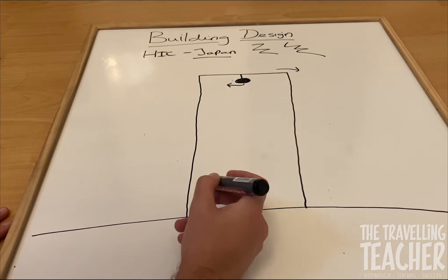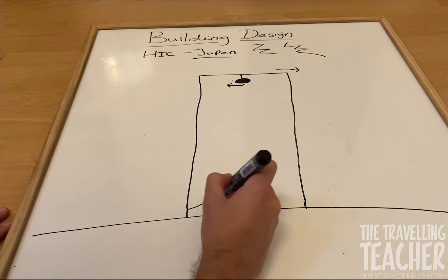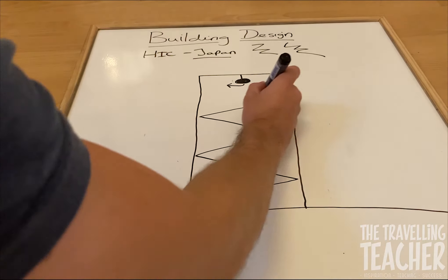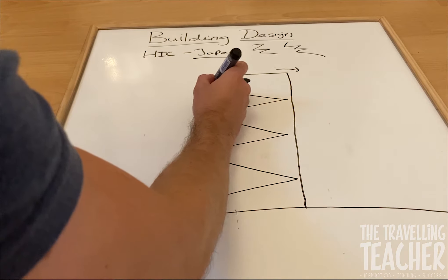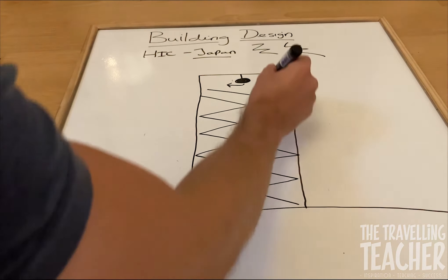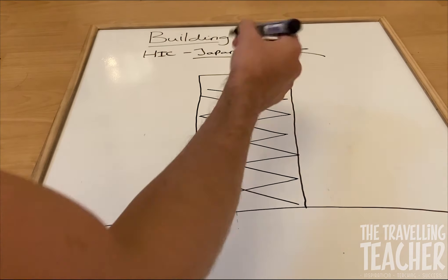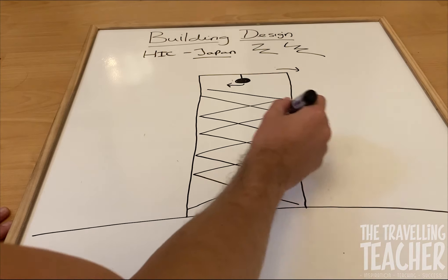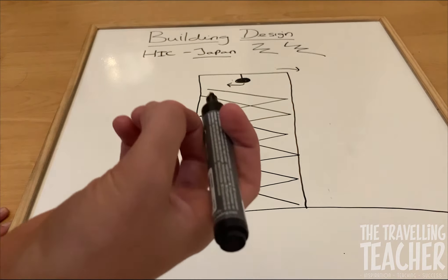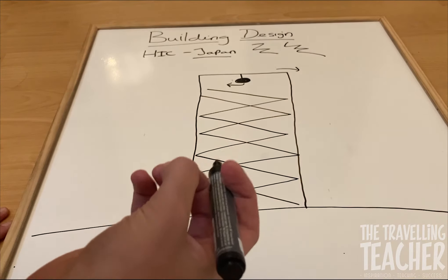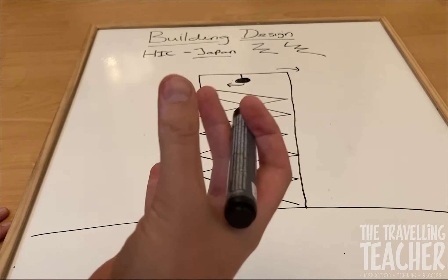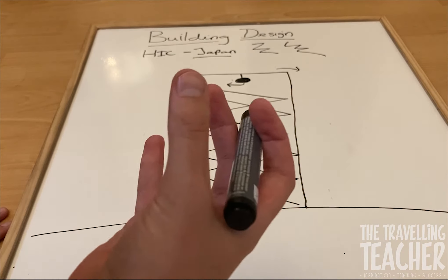The second thing they do is buildings may have cross bracing. So this is steel bracing that runs throughout the building. It can run vertically up and down, but sometimes it runs horizontally in a diagonal way such as this, and this just provides extra support and structure to withstand the violent shaking from an earthquake.